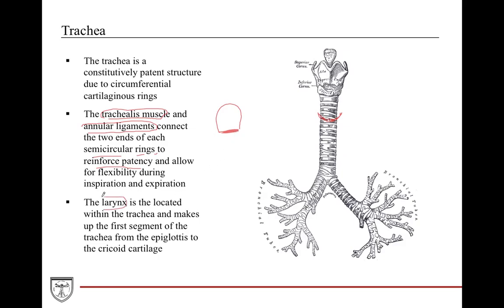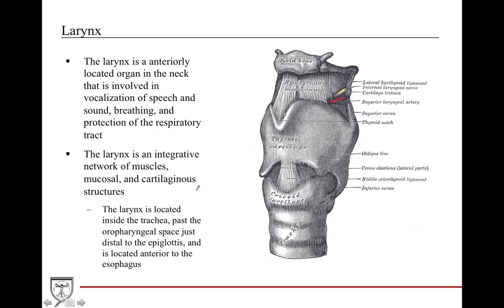The larynx is a structure located in the really early part of the trachea — the first segment — and it spans from the epiglottis all the way down to the cricoid cartilage. The larynx is a very unique structure because it's anteriorly located in the neck. It's involved in vocalization of speech, sound, and breathing, and it's helpful for protection of the respiratory tract. The larynx is an integrative network of both muscles, mucosal surfaces, and cartilaginous structures. It's located just past the oropharyngeal space, distal to the esophagus.